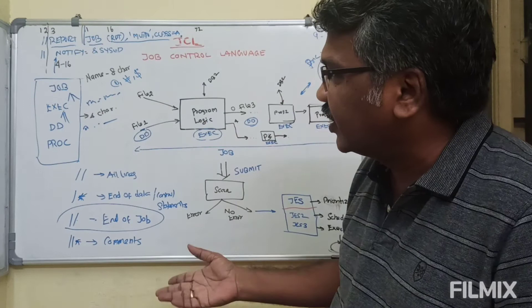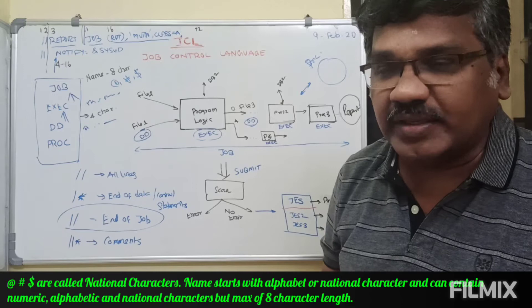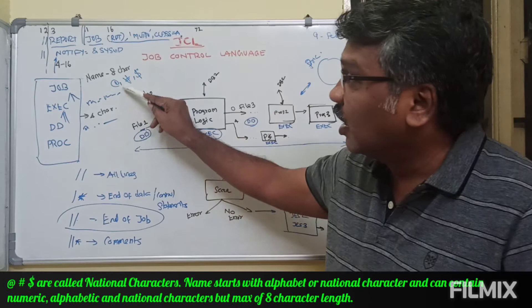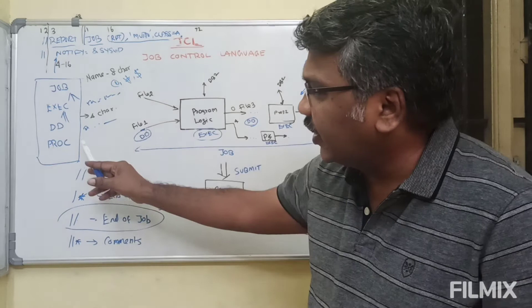Regarding naming, there is a naming convention. The rules are: the name has to be a maximum of eight characters, it can contain alphabetic, numeric, and national characters, and the first character should be either alphabetic or national.